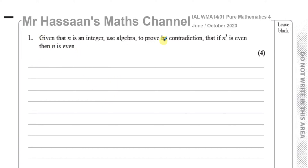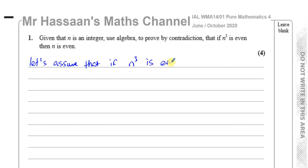What we have to do when proving by contradiction is assume the opposite. So we assume that if n cubed is even, where n is an integer, then n is odd. We assume the opposite of the statement.